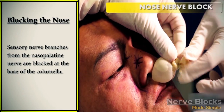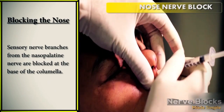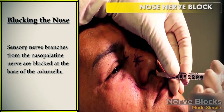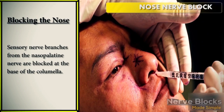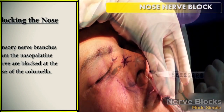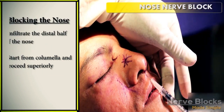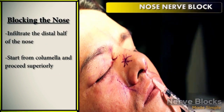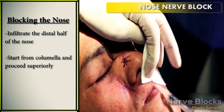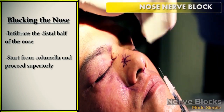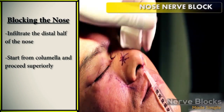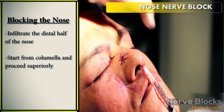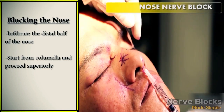Sensory nerve branches from the nasopalatin nerve are blocked at the base of the columella. Finally, infiltration of the distal half of the nose is performed starting from the columella for added anesthetic and vasoconstrictive effect.